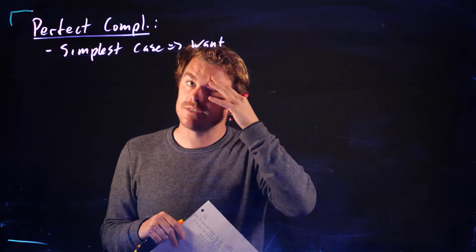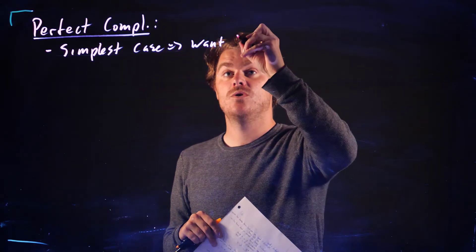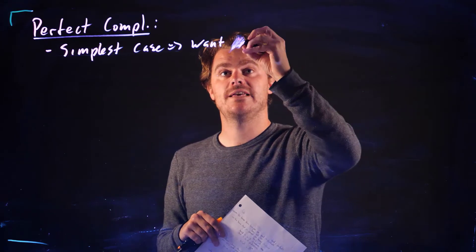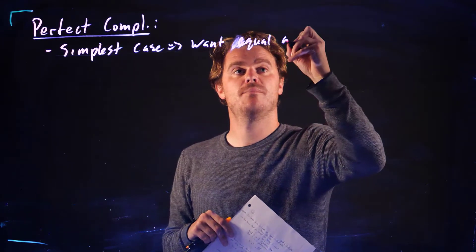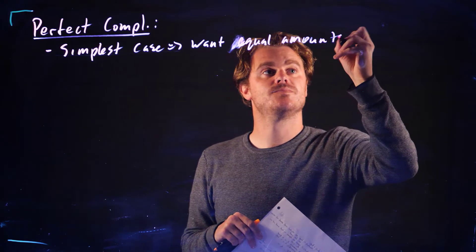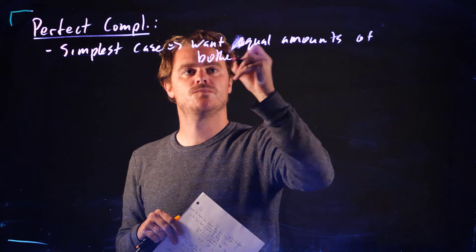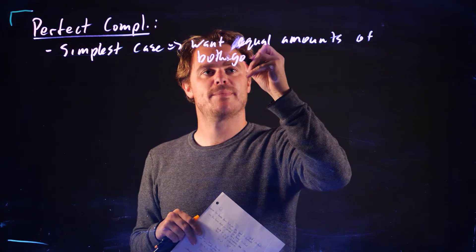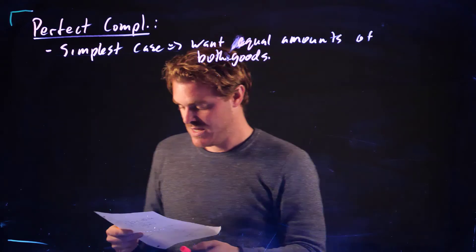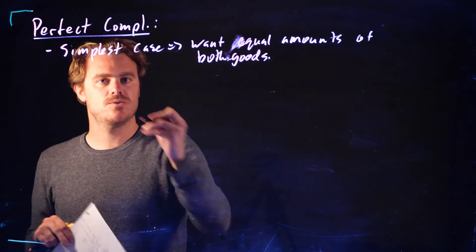We're going to make that assumption. Now, if it was different, with our tea and coffee example, we want two teaspoons or two tablespoons of sugar per cup of tea. That'd be slightly different. But hopefully you can think of how to generalize the simplest cases. So we want equal amounts of both goods.